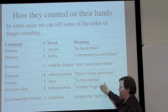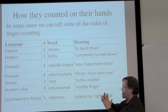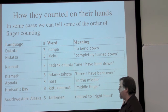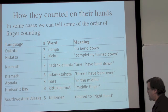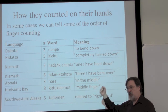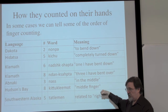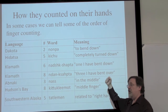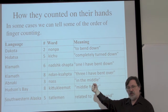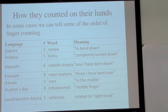Similarly in the Hudson Bay language, 'age' refers to presumably the middle finger on the other hand. In the Southwestern Alaskan language, the word for five is related to the word for right hand. So the first five numbers are almost certainly all being counted on the right hand, and then the left hand would come in for the next numbers.